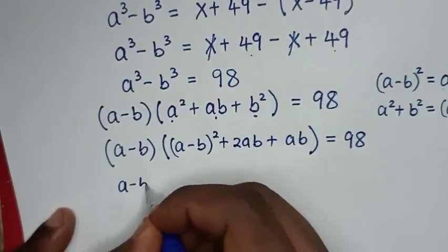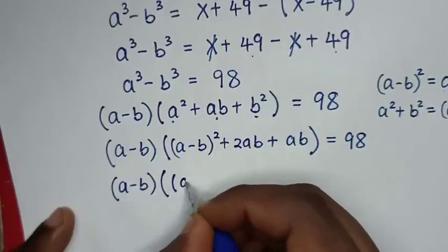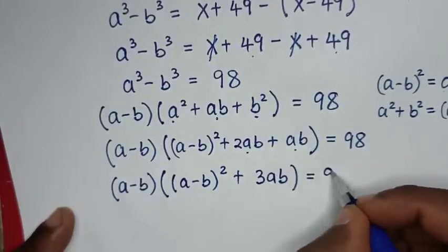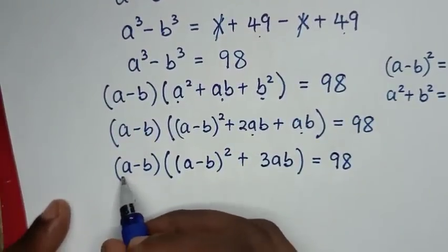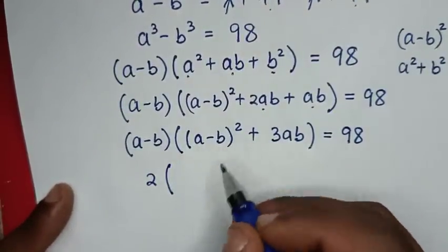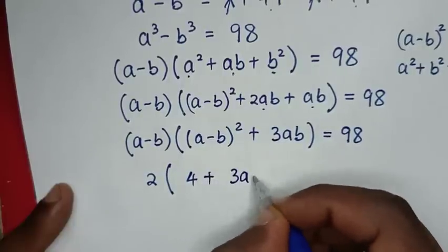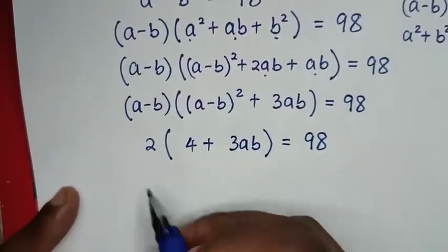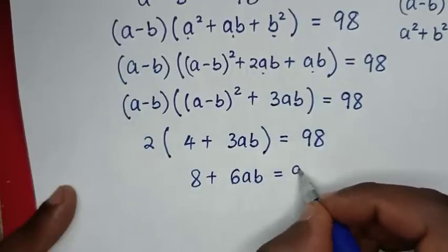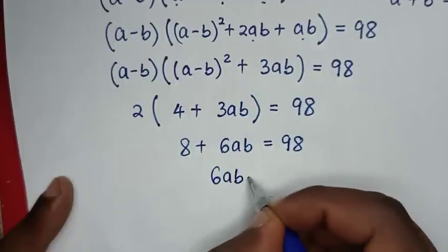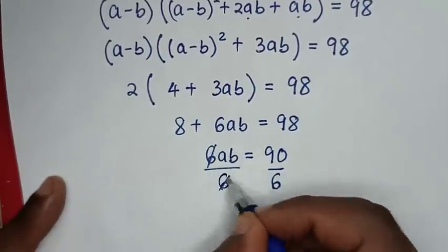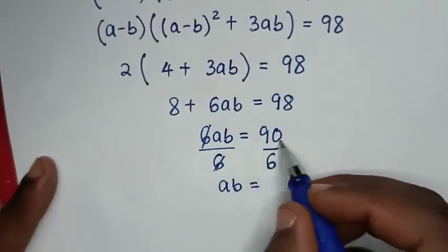This simplifies to (a minus b) times [(a minus b) squared plus 3ab] equals 98. Substituting a minus b equals 2: 2 times [4 plus 3ab] equals 98. Expanding: 8 plus 6ab equals 98, so 6ab equals 90, and dividing by 6 gives ab equals 15.